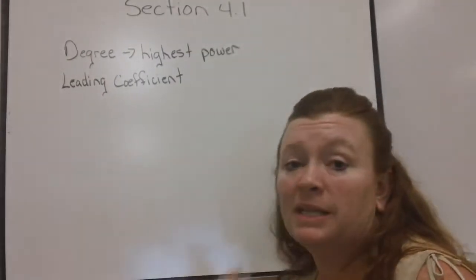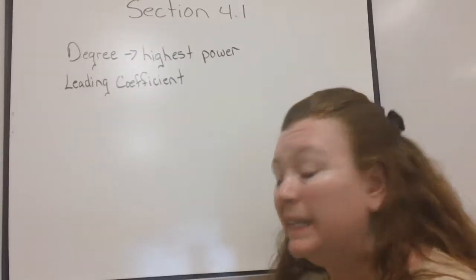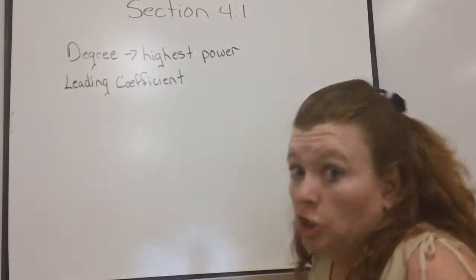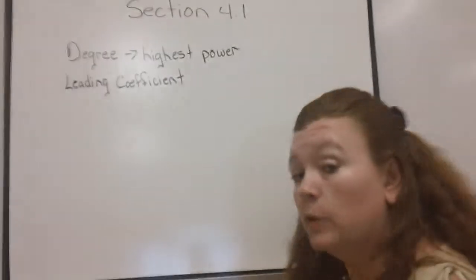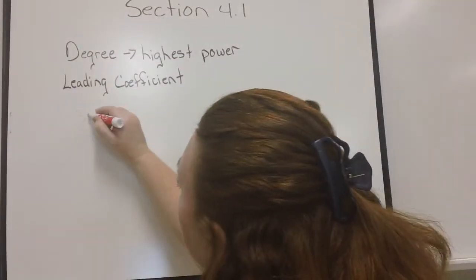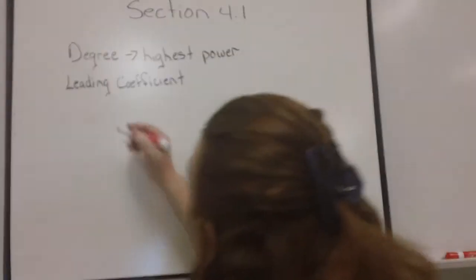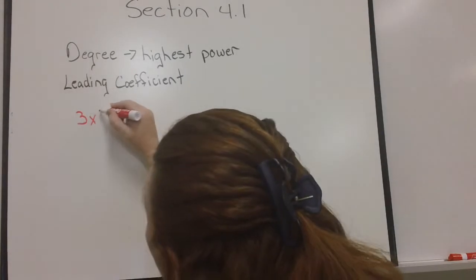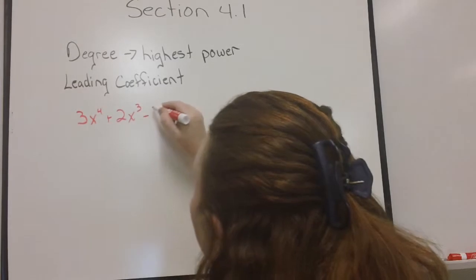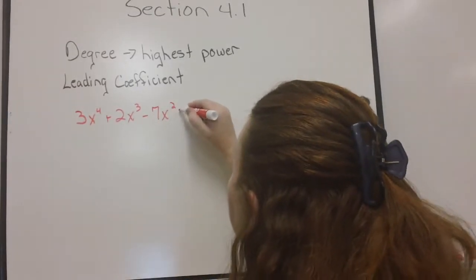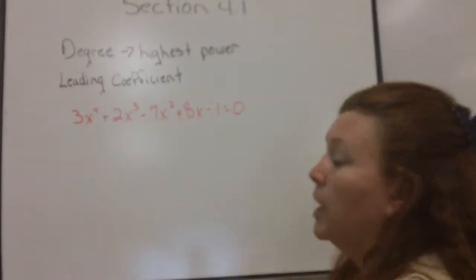A leading coefficient is basically the coefficient of that particular term. Now, the reason that they use the word leading is because it should be the first coefficient. But that's only if it's written in the proper order. For example, 3x to the 4th plus 2x to the 3rd minus 7x squared. There's a full, long polynomial.